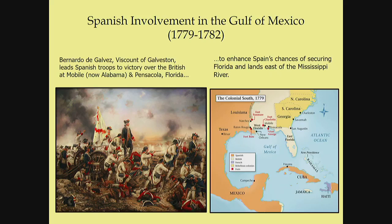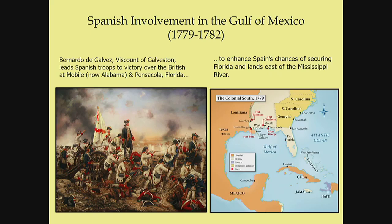By 1779, the British campaign strategy began to shift. Because France and Spain had declared war on Great Britain, Britain was protecting its colonies throughout the world and began pulling troops out of North America. They were going to rely on loyalists — people loyal to Great Britain — to fight the rest of the war. They had about 30,000 British troops in New York alone, but they were really relying on American loyalists to try to win the war, and so they shifted their emphasis to the South.